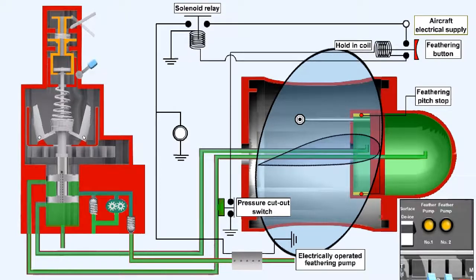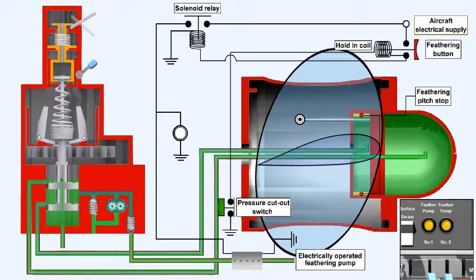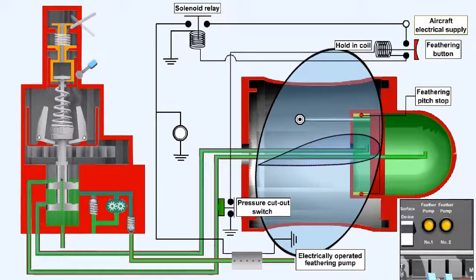The propeller control lever of the unit being unfeathered should be placed in line with that of the operating engine or engines, and where fitted the feathering lever should be reset. This allows the speeder spring to push the landed valve down. It also helps to minimize the yaw which will inevitably accompany the effect of unfeathering. Pressure oil can now be directed to one side of the pitch change mechanism to move the piston towards a finer pitch, and coarse pitch oil will be allowed to drain from the other side as it does so.